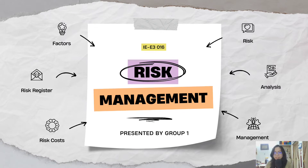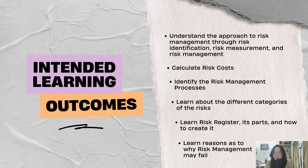From the activity and the video that took place earlier, we hope that everyone has gotten an idea of what our lesson will be about. Today, group one will be tackling module number four, which is about risk management. Before we get into the lesson proper, let's first talk about our ILOs — the intended learning outcomes for this module. Number one: understand the approach to risk management through risk identification, risk measurement, and risk management or mitigation. Number two: calculate risk costs. Number three: identify the risk management processes. Number four: learn about the different categories of risk. Number five: learn the risk register, its parts, and how to create it.